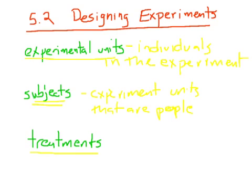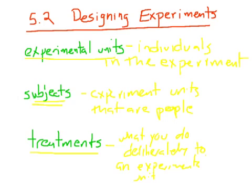The next big term is treatment. Treatment is what you do to an experimental unit — it's what the experiment is sort of all about, what you do deliberately to an experimental unit. For example, if you're doing an experiment on whether different kinds of suntan lotion work better, the treatment is the suntan lotion. If you're doing an experiment on lab rats where you feed them things and see if they develop tumors, what you feed them — the chemicals — is the treatment. If you do an experiment on people and ask them to complete a math problem while chewing gum, chewing gum is the treatment because it's what you're changing every time.